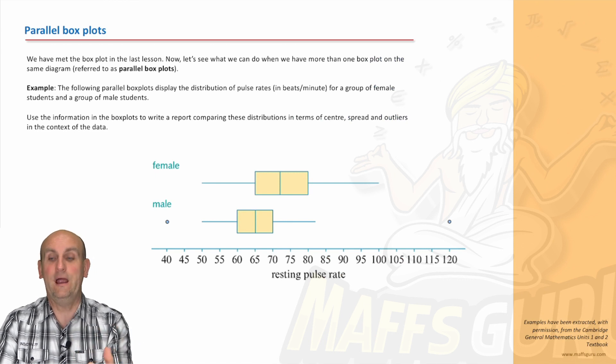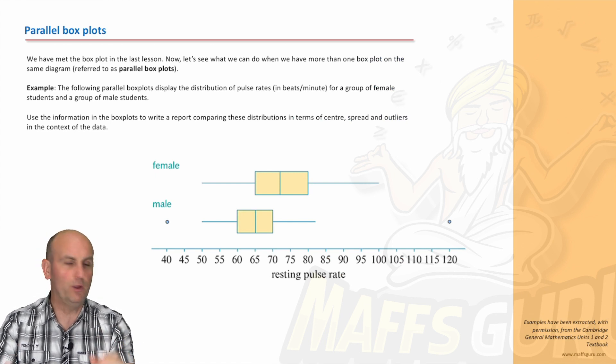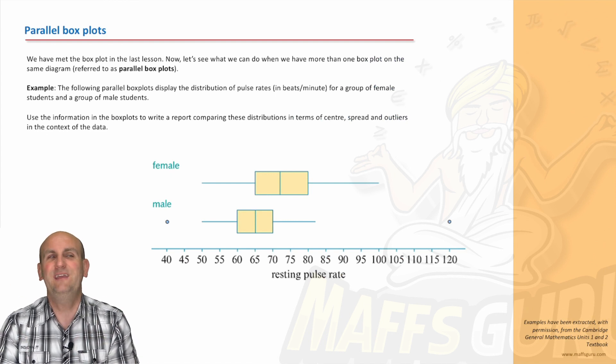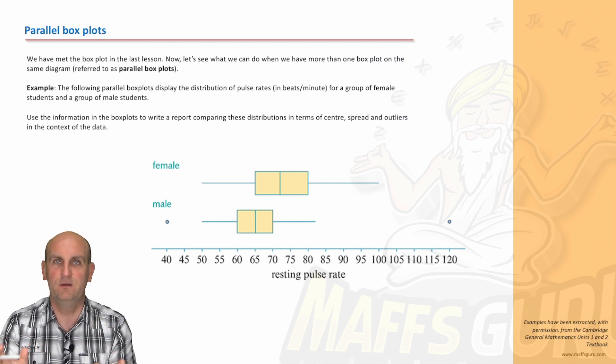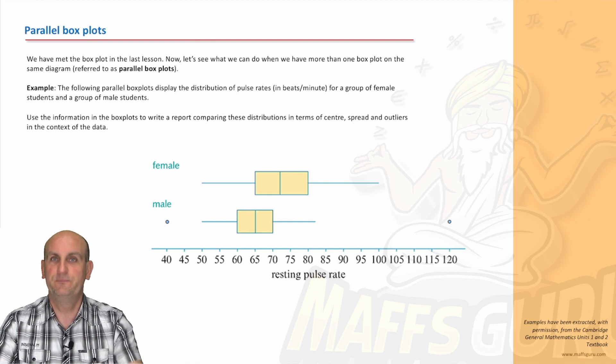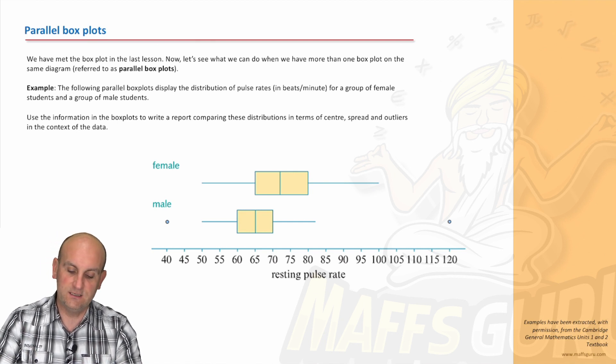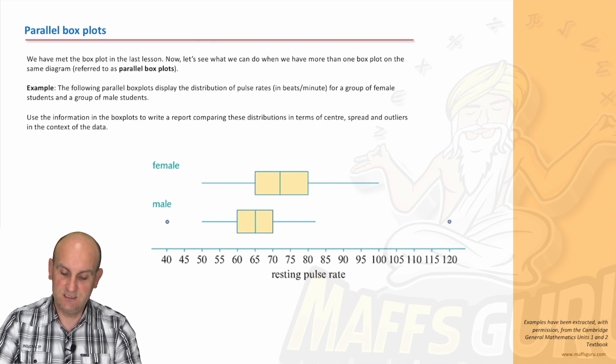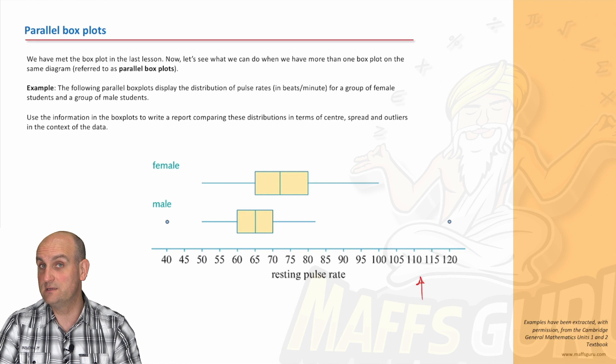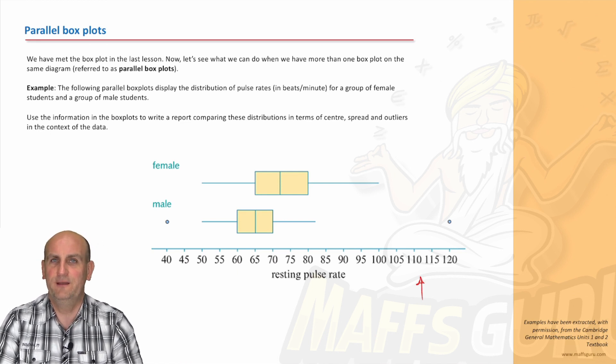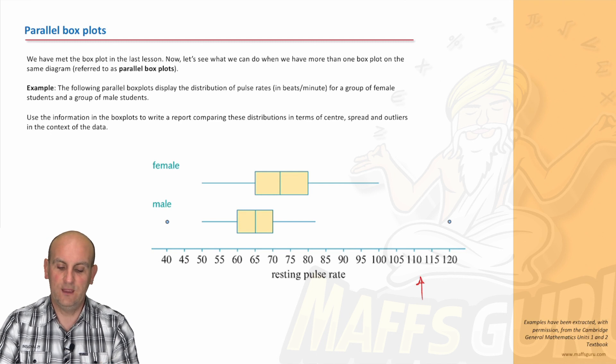Then we move on to parallel box plots. We love these because we like diagrams. Yes, the back-to-back stem plots was lovely, but it was still just numbers. Look at that diagram. Your brain's already trying to decode that by looking at it. What do we now notice? Do we have numerical data? Tick. We have the numerical data on the bottom. Do we have categorical data up the side? Yep, male and female. We can't find an average of male and female. Doesn't make any sense.